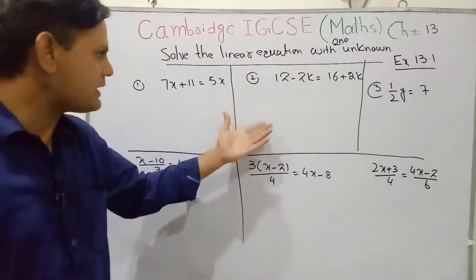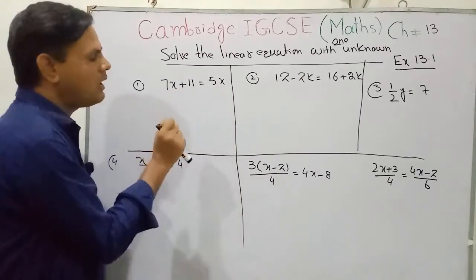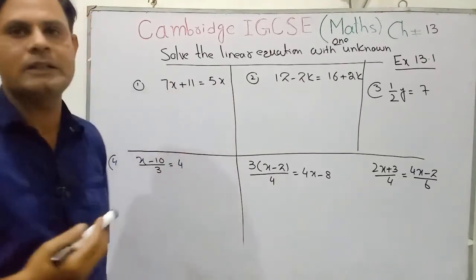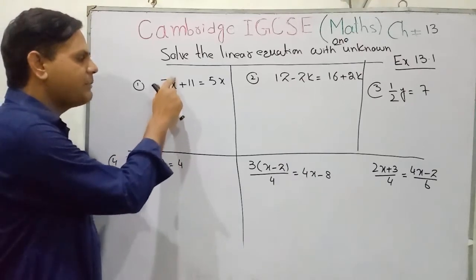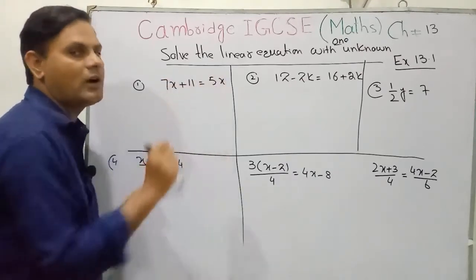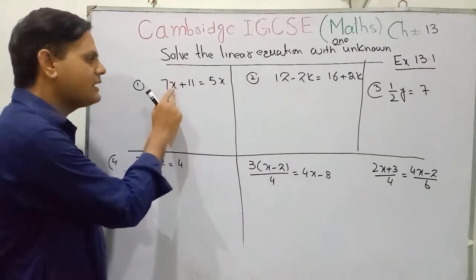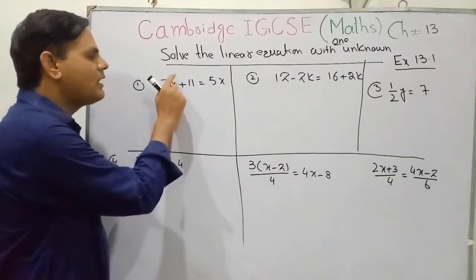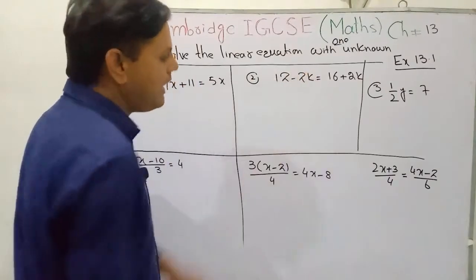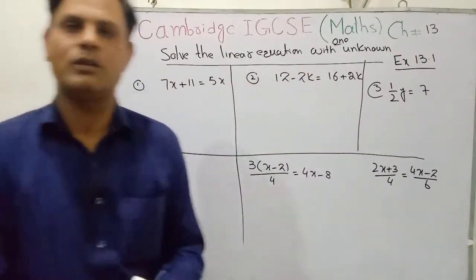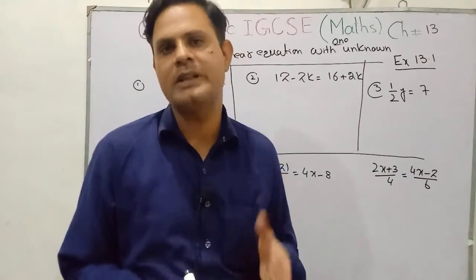In the given questions there are some unknown values — the unknowns are x and k. When you solve for this unknown value, the solution is called the solution of a linear equation. What is a linear equation? If the power or exponent of the variable quantity is one, then the equation is called a linear equation. Looking at all the questions, the value of the variable exponent is one: the power of x is one, and the exponent of k is one. So every question has a power of only one. If a variable has only one exponent, then the equation is called a linear equation.